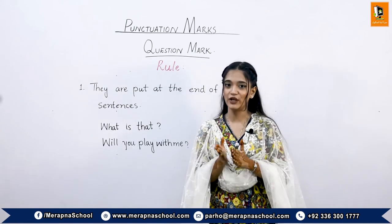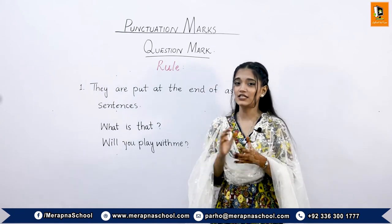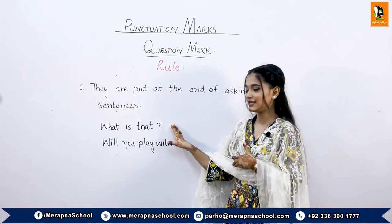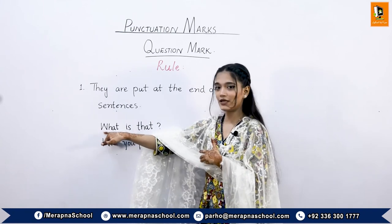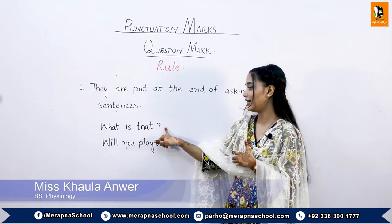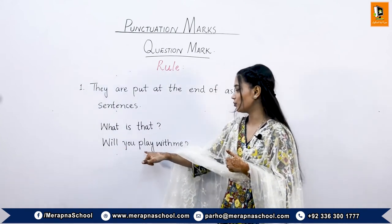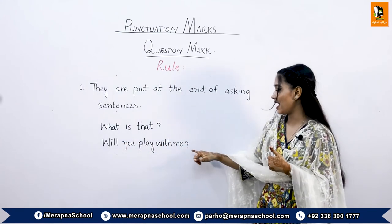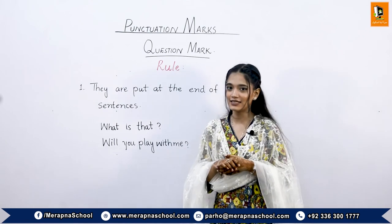Asking sentences start with question words like what, which, who, whom, where, etc. They can also start with helping verbs. For example, 'What is that?' starts with a question word and ends with a question mark. In the sentence 'Will you play with me?' the sentence starts with a helping verb and at the end we have put the question mark, showing that it is an asking sentence.